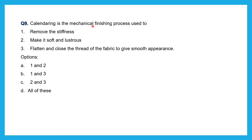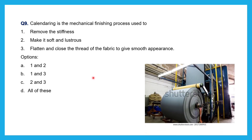Question number nine: Calendaring is the mechanical finishing process used to — remove the stiffness, make it soft and lustrous, flatten and close the threads of the fabric to give a smooth appearance. Options are one and two, one and three, two and three, or all of these. Calendaring presses or irons the bulk of fabric. It removes stiffness, makes the fabric soft and lustrous, and flattens and closes thread gaps left after weaving to give a smooth appearance. So the answer is all of these.